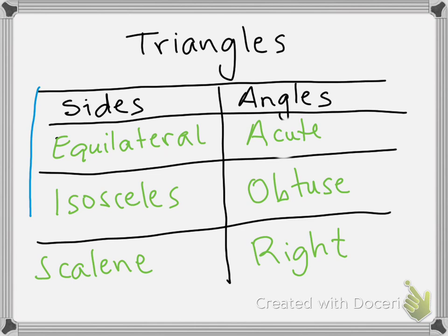What you need to remember is that equilateral means three equal sides — all the sides are equal. Isosceles means at least two equal sides, and scalene means no equal sides. So you have three equal sides, at least two equal sides, and no equal sides. That's the name by the sides.